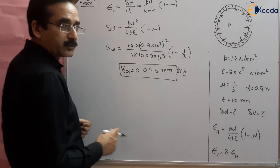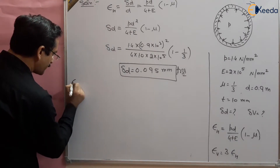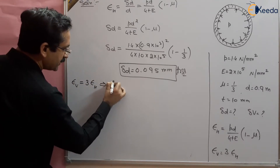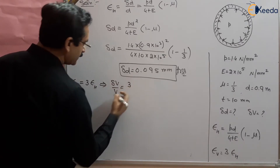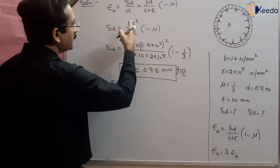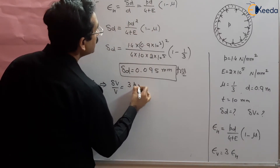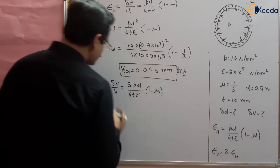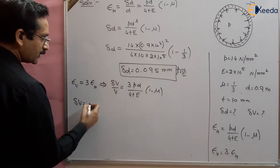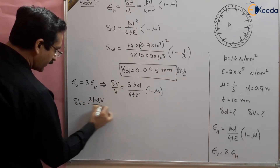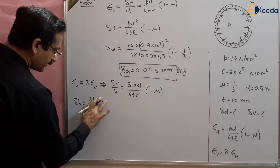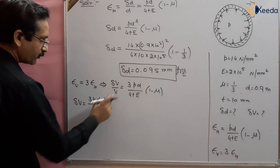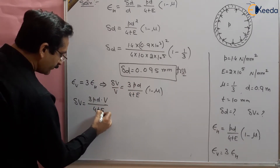Next is to find the volumetric strain and change in volume. Volumetric strain is three times the hoop strain, so: ΔV / V = 3 × Pd / (4tE) × (1 − μ). From here, change in volume ΔV equals 3PdV / (4tE) × (1 − μ), where V is the volume of the sphere and d is the diameter.